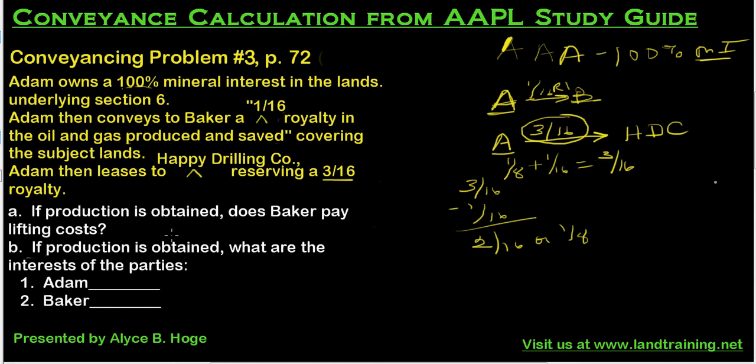Now they want to know: if production is obtained, does Baker pay the lifting costs? The lifting costs are the costs associated with getting the oil and gas from the reservoirs to the surface. That could include things like labor costs, separating costs — the cost to separate the oil from the gas — dehydration costs to get the water out of the oil and gas, and compression costs, since gas requires a large machine to force it through the pipeline. So those are what lifting costs are.